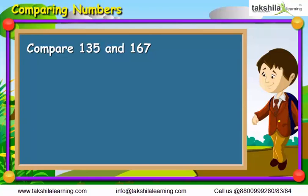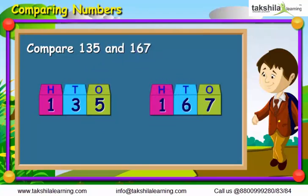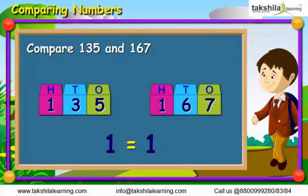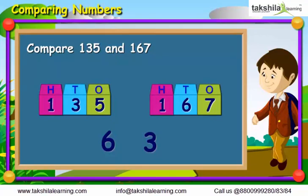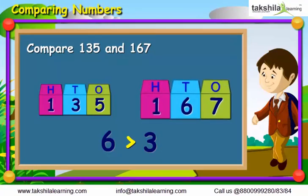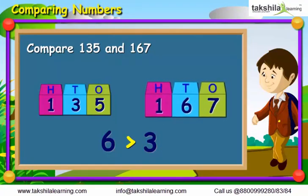In this case, we have to follow some steps. Let us first place the numbers as shown. Start from the 100th digit and compare the 100th digit of both the numbers. Here, both the digits in the 100th place are the same, so we move on to the next digit. On comparing the digits in the 10th place, we find that 6 is more than 3. Hence, 167 is greater than 135.